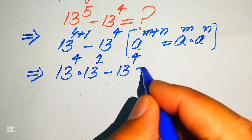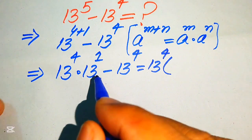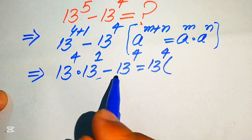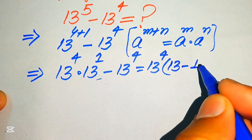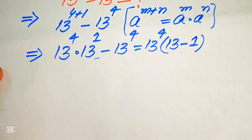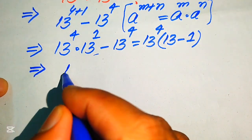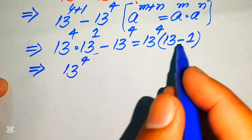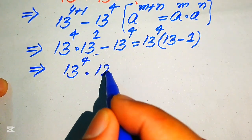We can see that 13 to the power of 4 is the common term. Taking 13⁴ as a common factor from both terms, we get 13⁴ multiplied by (13 minus 1), and 13 minus 1 equals 12. So the expression becomes 13⁴ × 12.